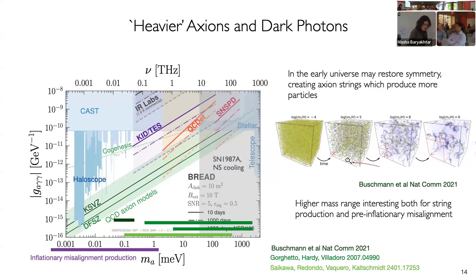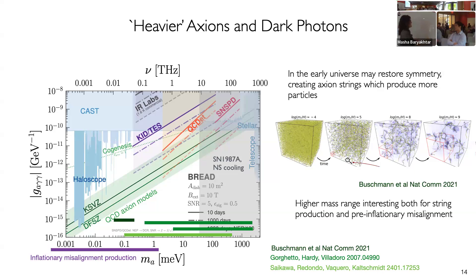So as an experimentalist, it's often good to not listen too much to theorists, and we can just cover this whole parameter space to be sure that we're looking for the QCD axion everywhere that it can be. That motivates looking at this heavier region between where the heliscope experiments like ADMX are looking and the upper bounds from astrophysics.